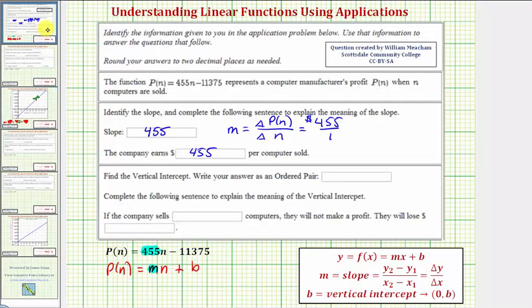Next we're asked to identify the vertical intercept and write as an ordered pair. The vertical intercept is equal to b, and because we have minus 11,375, we have a negative vertical intercept, which as an ordered pair is zero comma b, so the vertical intercept is the point zero comma negative 11,375.